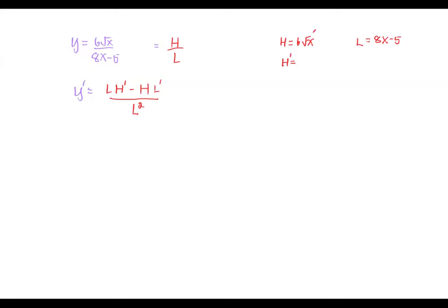Note that square root x is x to the power 1 half. Therefore, the derivative of 6 square root x is 6 times 1 over 2 times x to the power negative 1 half, which simplifies to 3 times x to the power negative 1 half. For the derivative of the denominator, it's going to be 8.